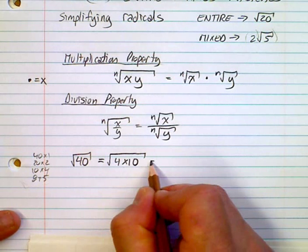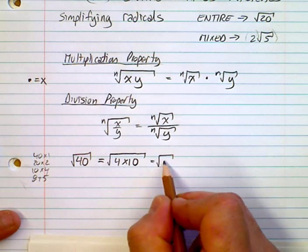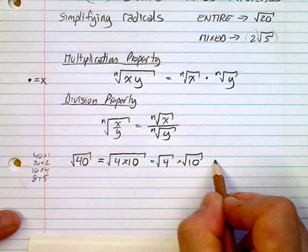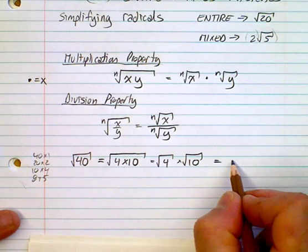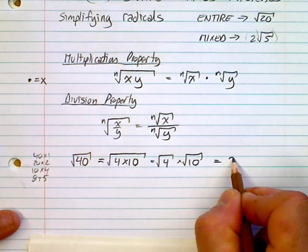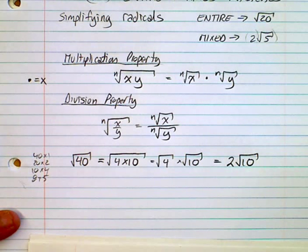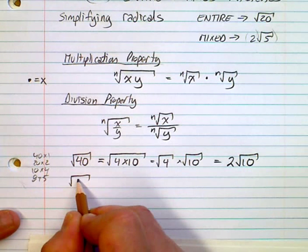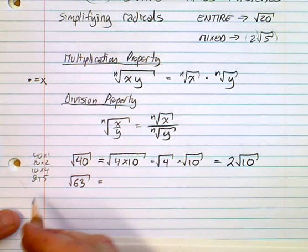Using the multiplication property, we split it into the square root of 4 times the square root of 10. The square root of 4 is 2, so the answer is 2 root 10. We've converted an entire radical into a mixed radical.